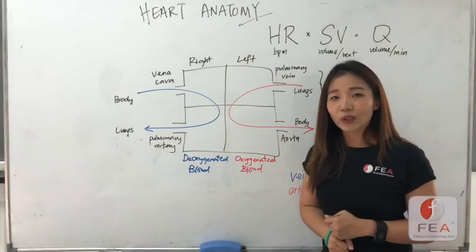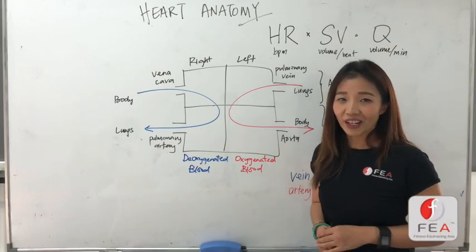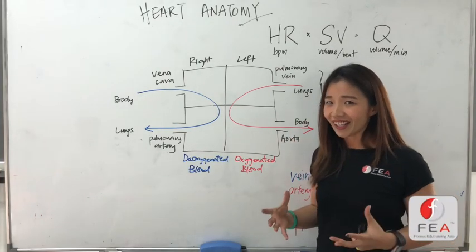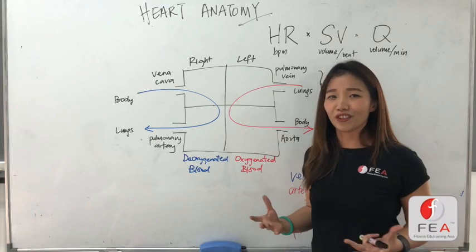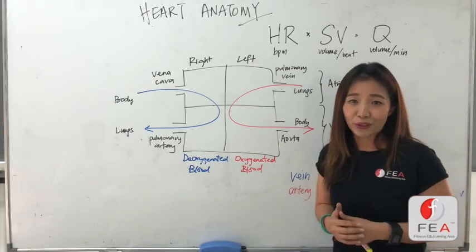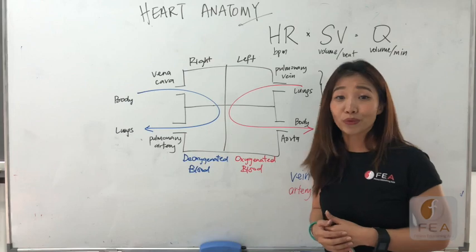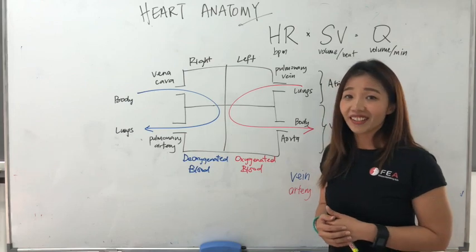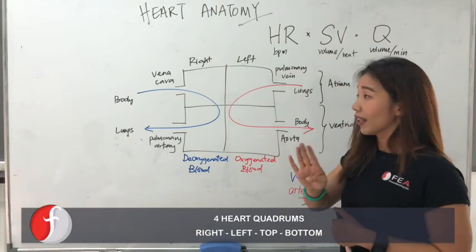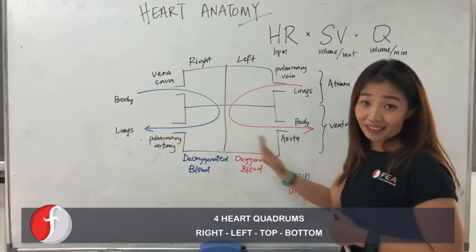Next, we're going to look at an illustration of your heart. Now, this does not look like your heart that you probably see in your textbook, but this is basically made simple for you to understand how the blood actually moves through your heart. Now, if you look at your heart, there are four chambers. We have the right side, we have the left side.